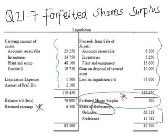If there's a forfeiture of shares as part of the liquidation process, that reserve account is treated as, or viewed as, a gain resulting from the liquidation process, and the effect of it is that it reduces the deficit to the shareholders. To calculate that reserve account, you have to think back to the journal entries we studied when we covered share issues and the forfeiture of shares.